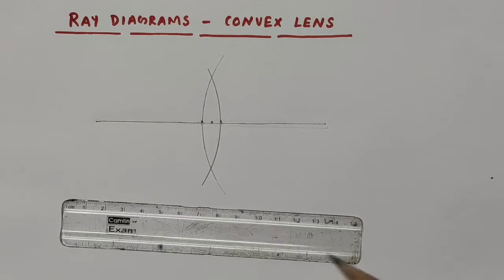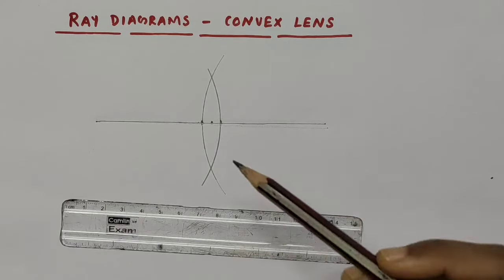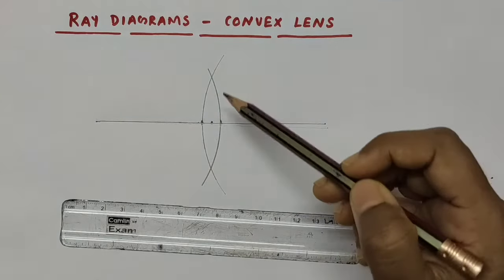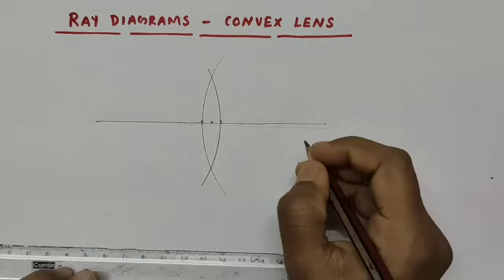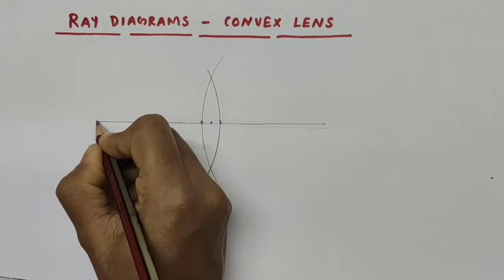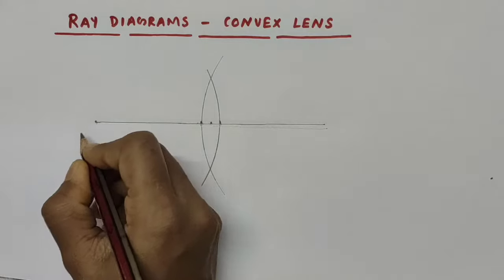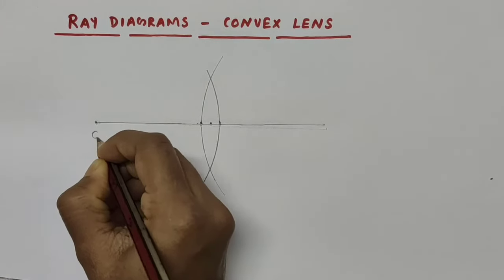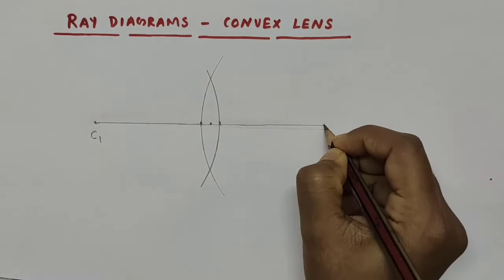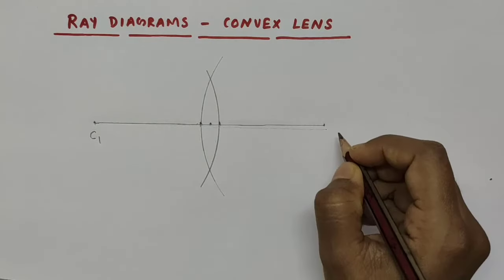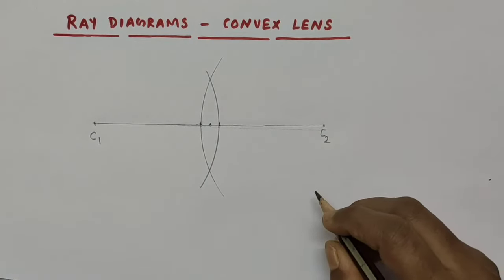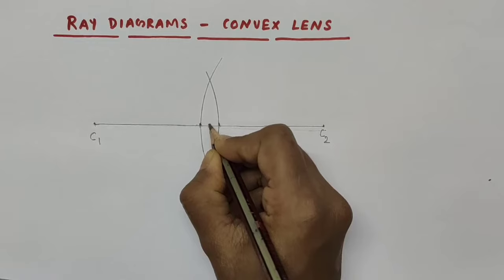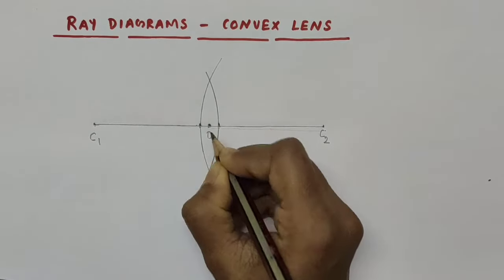Now a convex lens has two spherical surfaces — one is this one, another one is this one. Hence two centers of curvature. So the leftmost end will be one center of curvature — I am taking this as C1. And the rightmost end would be the second center of curvature — I am taking this as C2. This midpoint is the optical center of the lens.